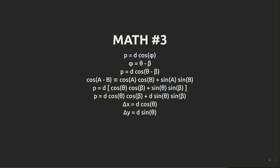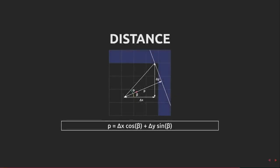Taking this knowledge and substituting capital delta x and capital delta y give us this. p equals capital delta x cos beta plus capital delta y sin beta. We already know capital delta x and capital delta y. They're just the intersection x minus the player x and the intersection y minus the player y.